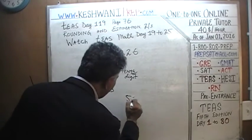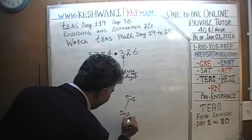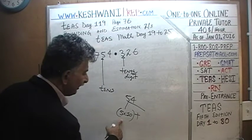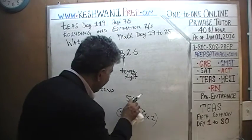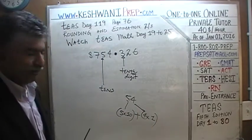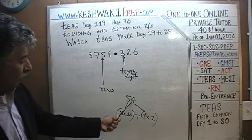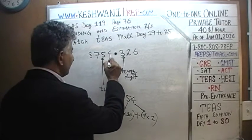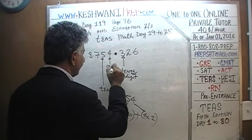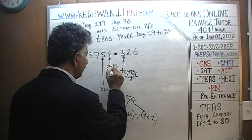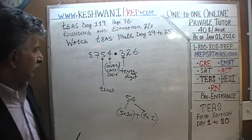Why? Because if you write 54, what does that tell us? 54 tells us that we have 5 tens and 4 ones. So 5 is called the tens digit, because it tells us how many tens we have. And 4 tells us how many ones we have — this is called the ones digit.